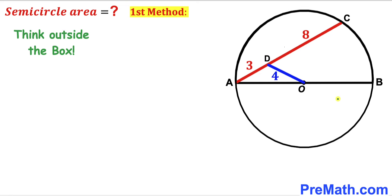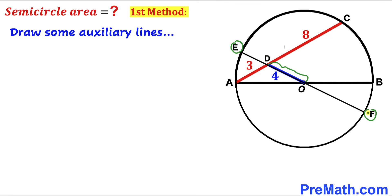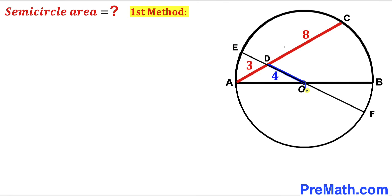We are going to focus on the full circle with center O, and draw some auxiliary lines to make our job simpler. We have extended segment OD all the way to points E and F on the circle. Let's assume OF is the radius of this circle, labeled as lowercase r. We know segment OD is 4, so segment DF is going to be r plus 4.